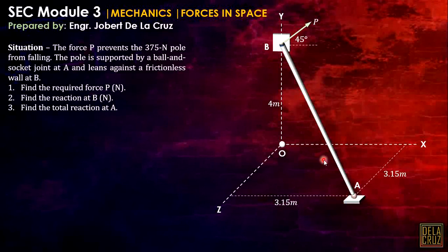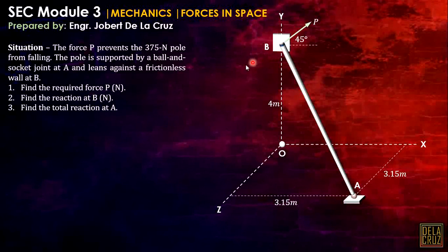At point A, that is a ball and socket joint — similar to a pin in 2D plane view. It will prevent translation in any direction. So we have three components of reaction: AX, AY, and AZ. In 2D we only have RX and RY, but since this is 3-dimensional, we have 3 component reactions. At the wall, that is a frictionless plane wall, so the reaction at B is just a normal force on that plane.